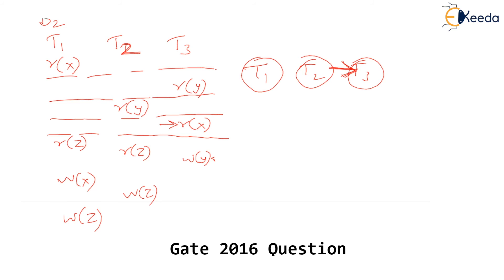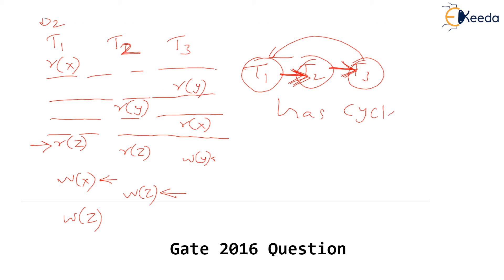Now read X of T3 will conflict with write X of T1, so there is an edge from T3 to T1. Next, read Z of T1 will definitely conflict with write Z of T2, giving an edge from T1 to T2. Stop checking the remaining schedule — clearly this graph has a cycle: T1 to T2, T2 to T3, and T3 back to T1. Therefore S2 is not conflict serializable.